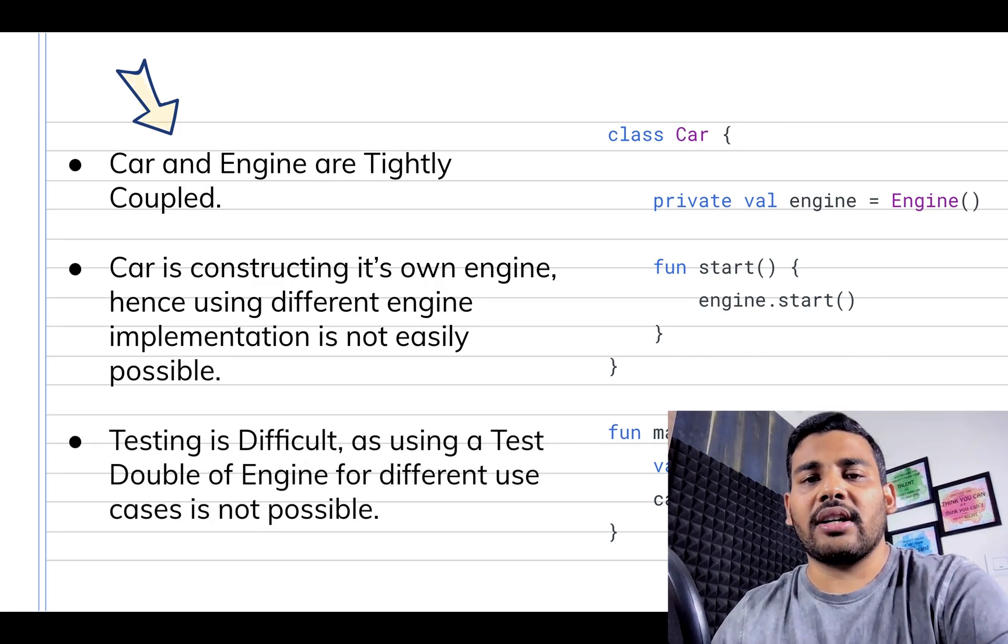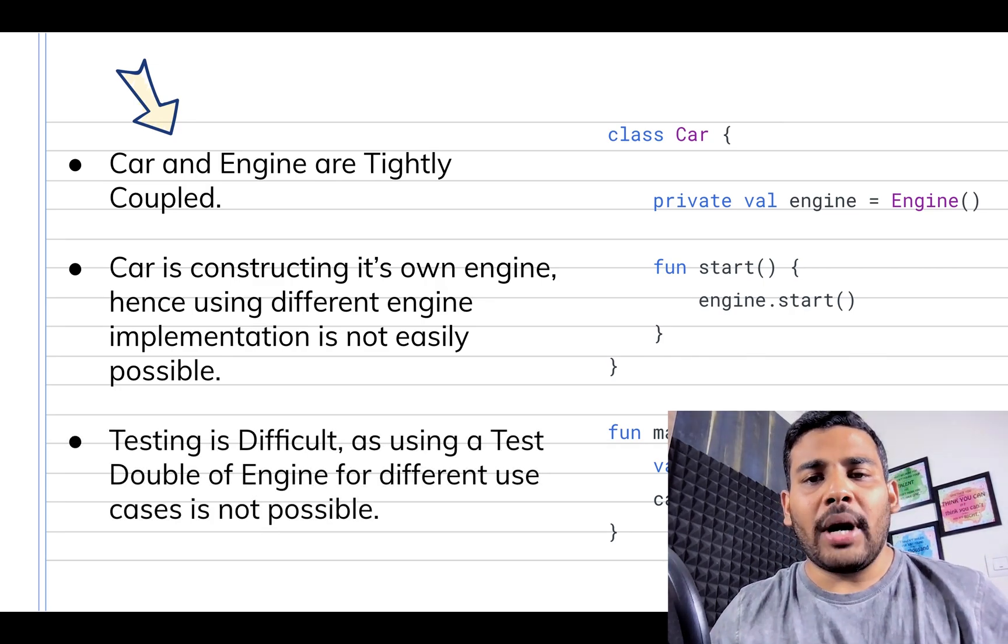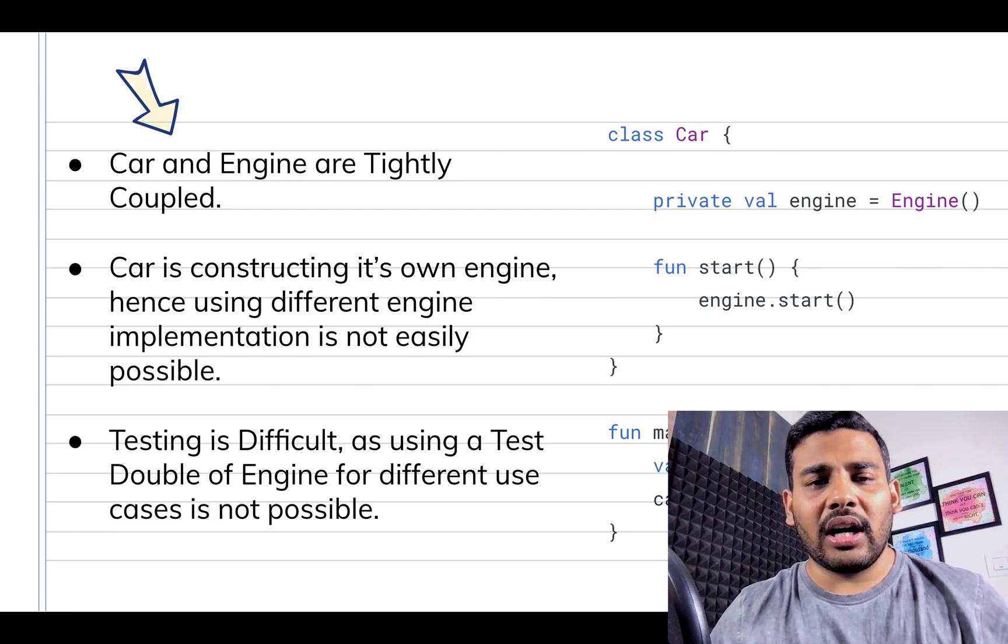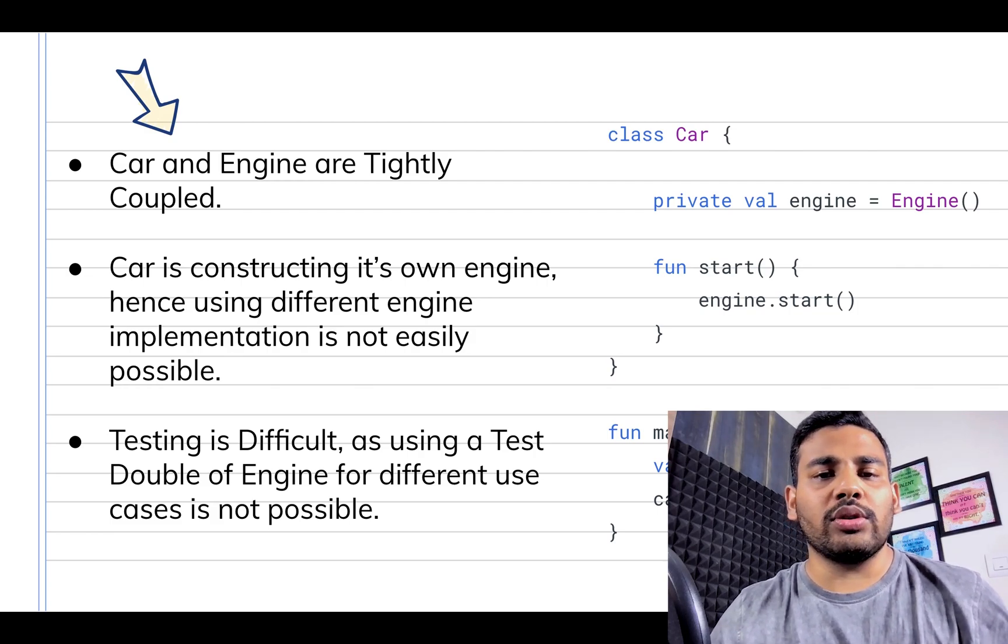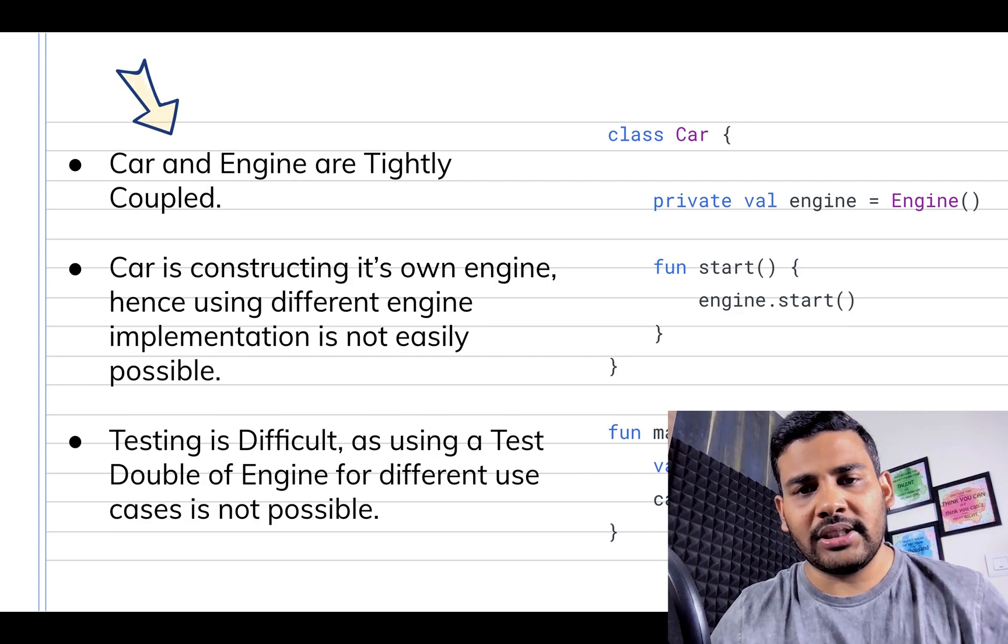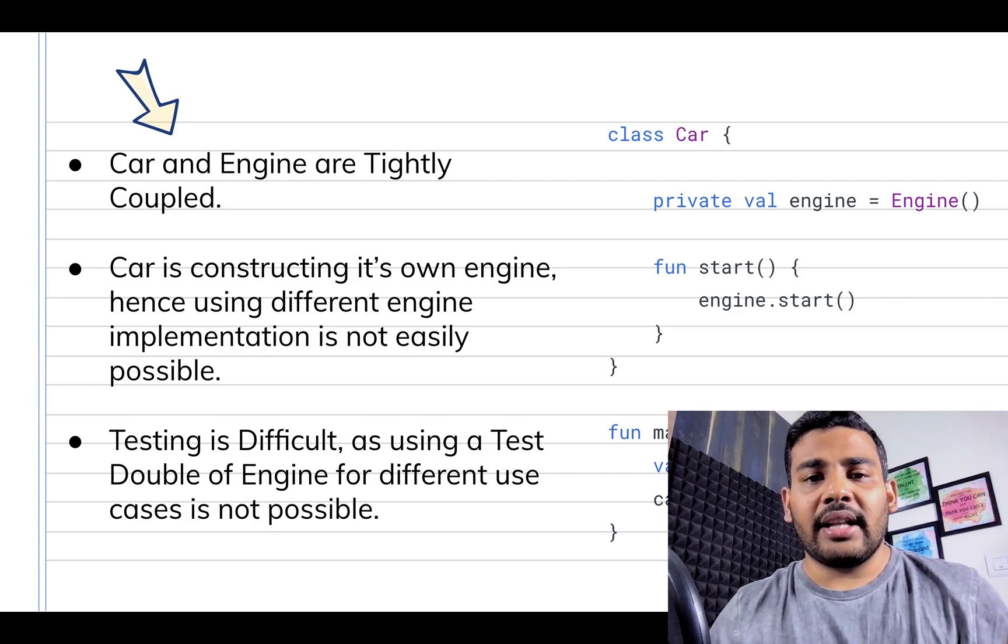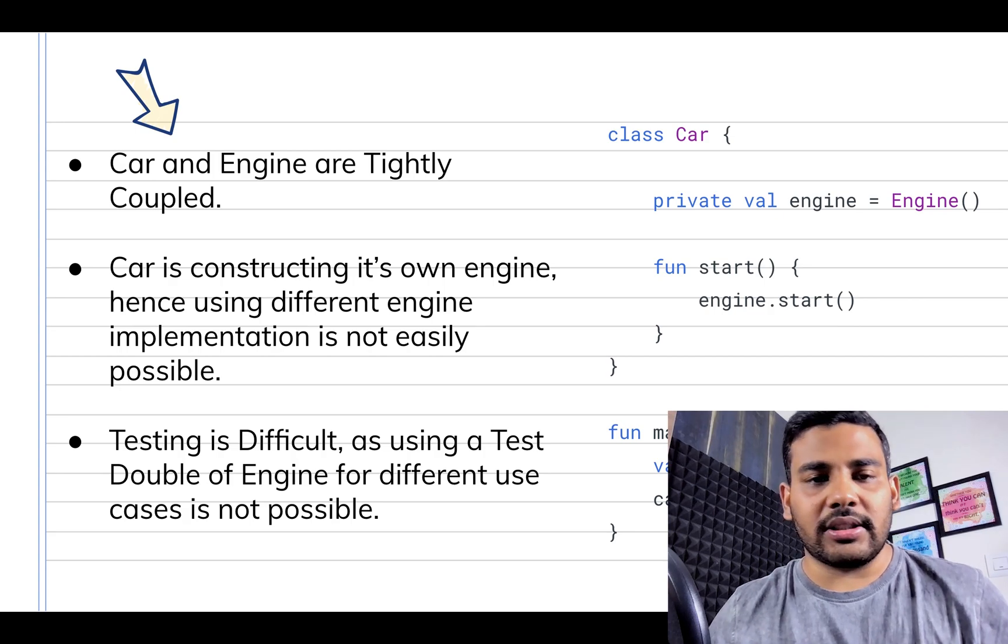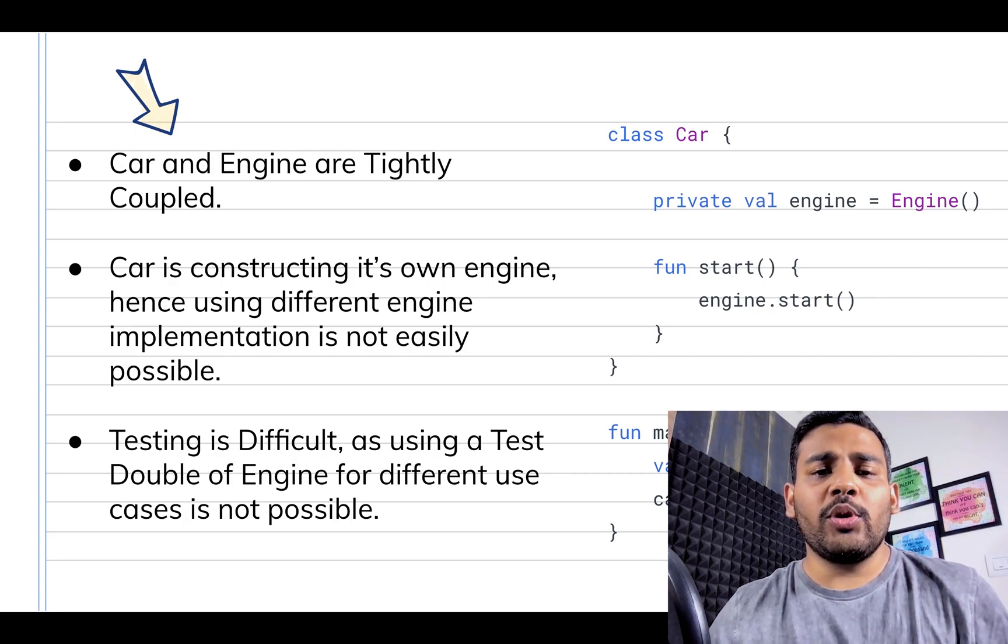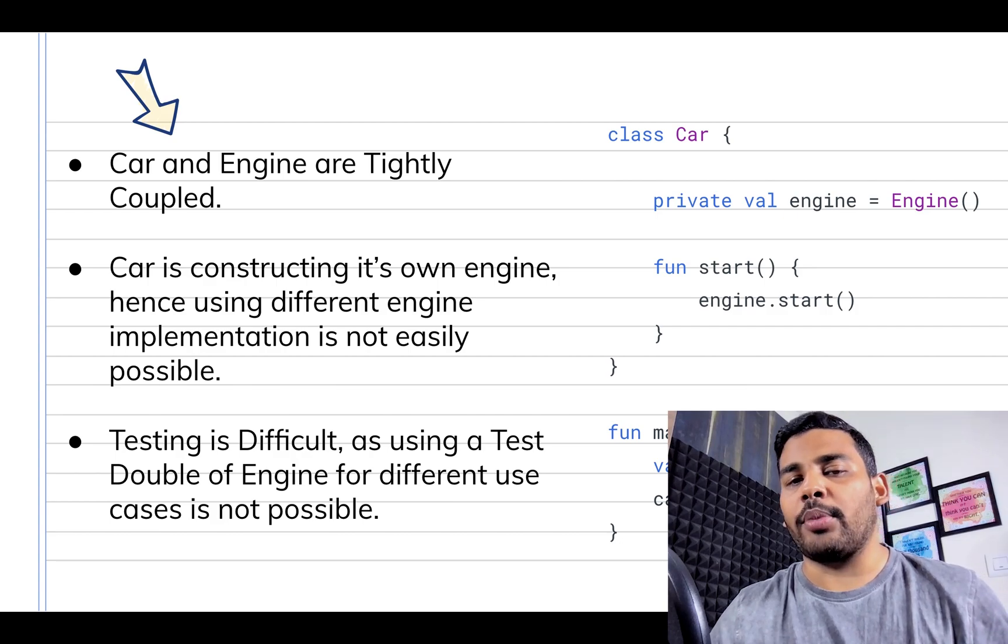Because Car is constructing its own Engine, passing a test double for Car to test different use cases is also not possible. For testing, many times we mock objects that are called test doubles. So I hope you understood what are the issues with this approach.